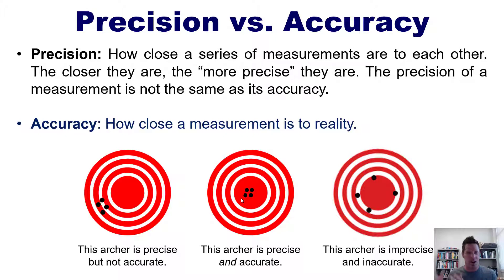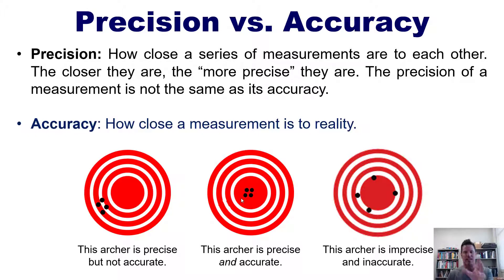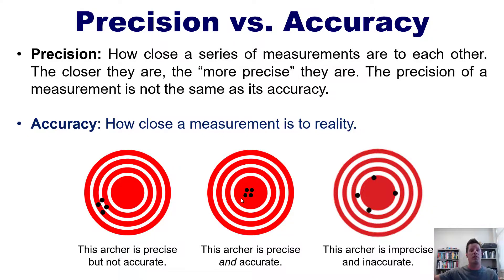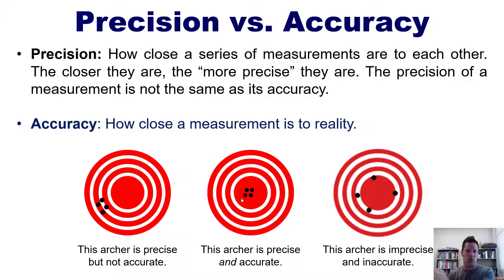Of course this assumes you have a perfect scale actually giving you true measurements, and that the second scale isn't also in error — but that's a theoretical thing we're dealing with. The point is: if all of your measurements are very close to each other but very far away from reality, they're precise but inaccurate. If your measurements are both close to each other and close to reality, then you're both precise and accurate. And if you're all over the place, then you're neither.